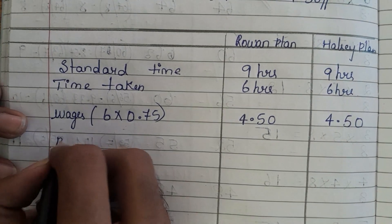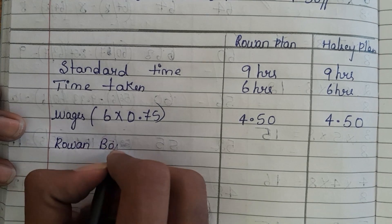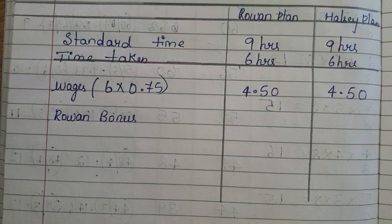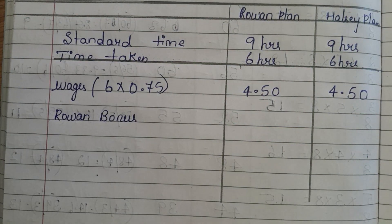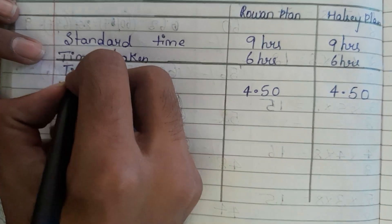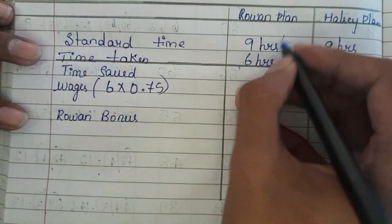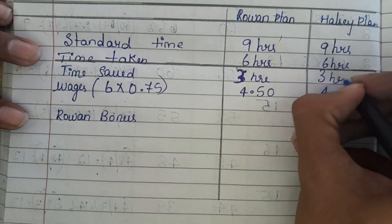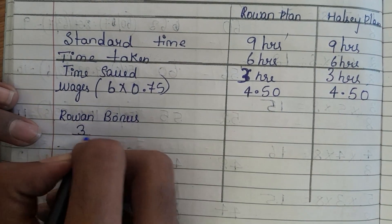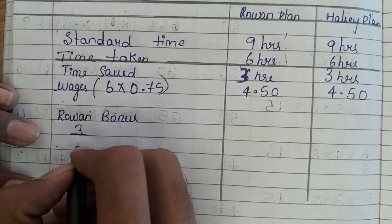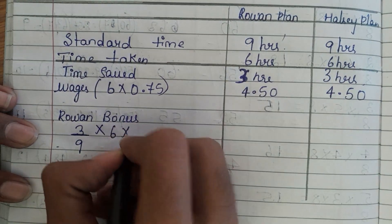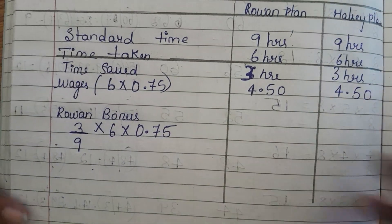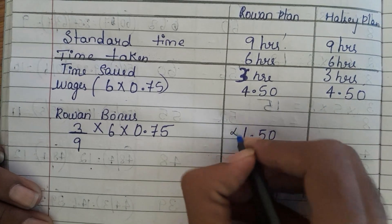We need to calculate Rowan bonus. The formula is: time saved divided by standard time, multiplied by time taken, multiplied by rate. Time saved is 3 hours. So, 3 divided by 9, multiplied by 6 hours, multiplied by rate 0.75. Calculating this, we will get 1.50 as the Rowan bonus.